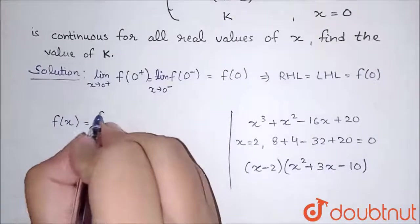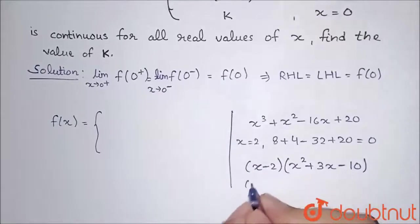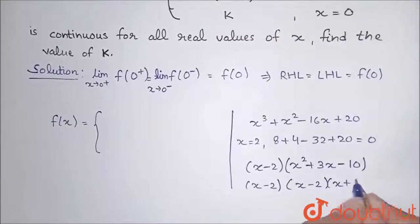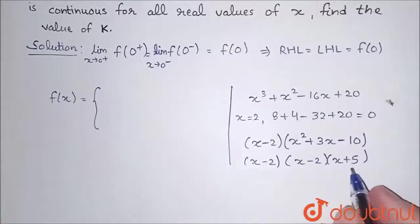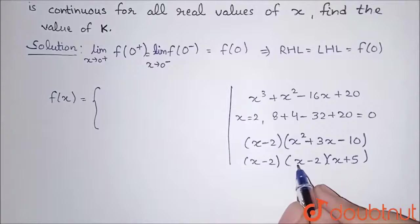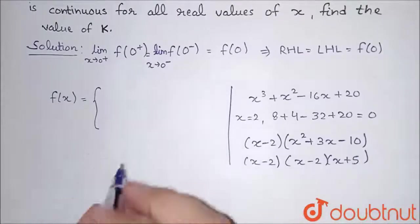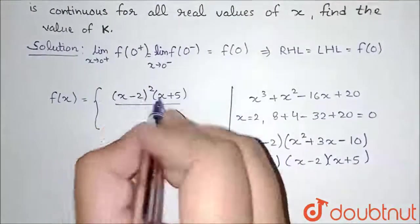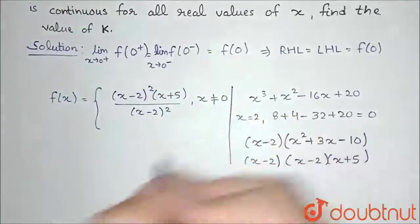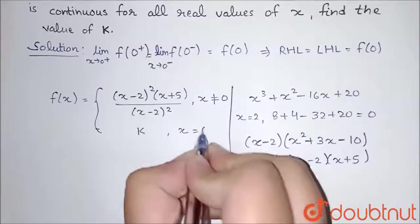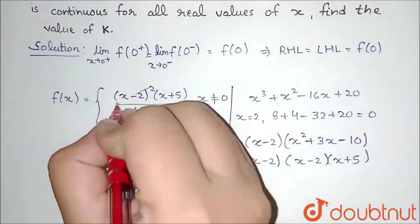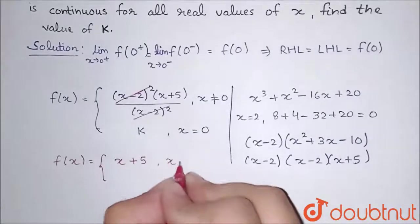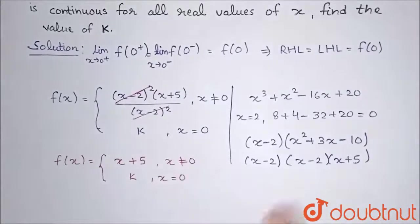So the cubic factors as (x minus 2)(x squared plus 3x minus 10). Factorizing further: x squared plus 3x minus 10 equals (x minus 2)(x plus 5), since x times x equals x squared, minus 2x plus 5x equals plus 3x, and minus 2 times 5 equals minus 10. Therefore the numerator is (x minus 2) squared times (x plus 5). Canceling (x minus 2) squared with the denominator, f(x) simplifies to x plus 5 for x not equal to 0, and k for x equal to 0.